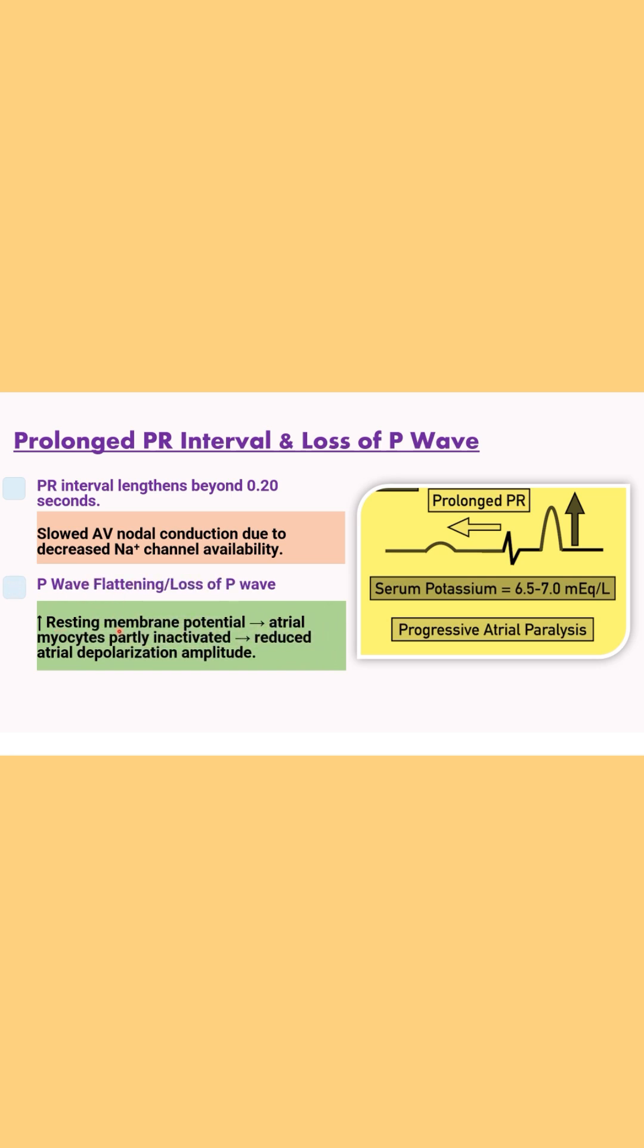This occurs mainly due to the raised resting membrane potential which leads to atrial myocyte inactivation leading to the reduced atrial depolarization amplitude which leads to the decreased amplitude of the P waves and progressively loss of the P waves.